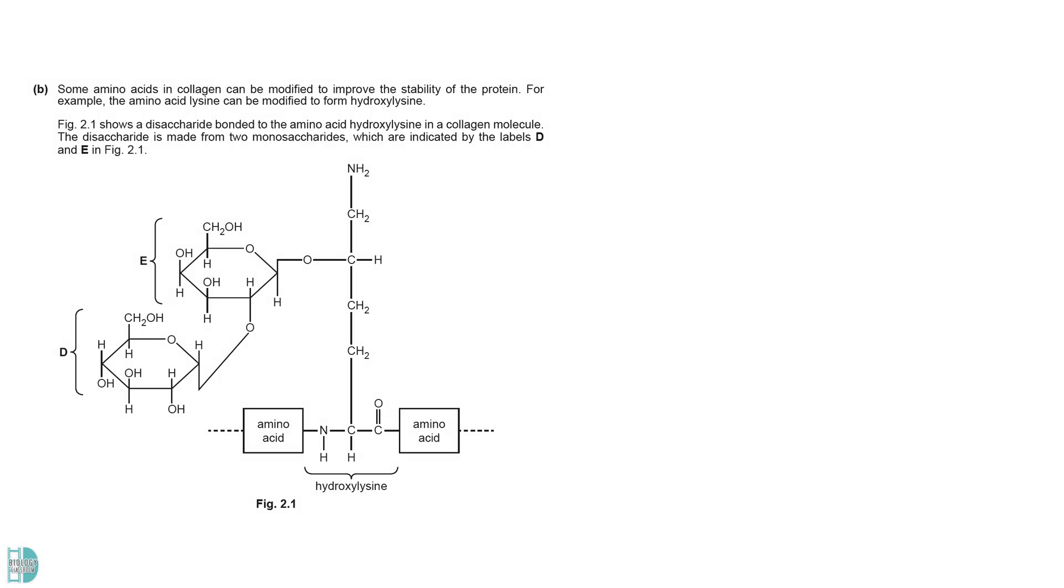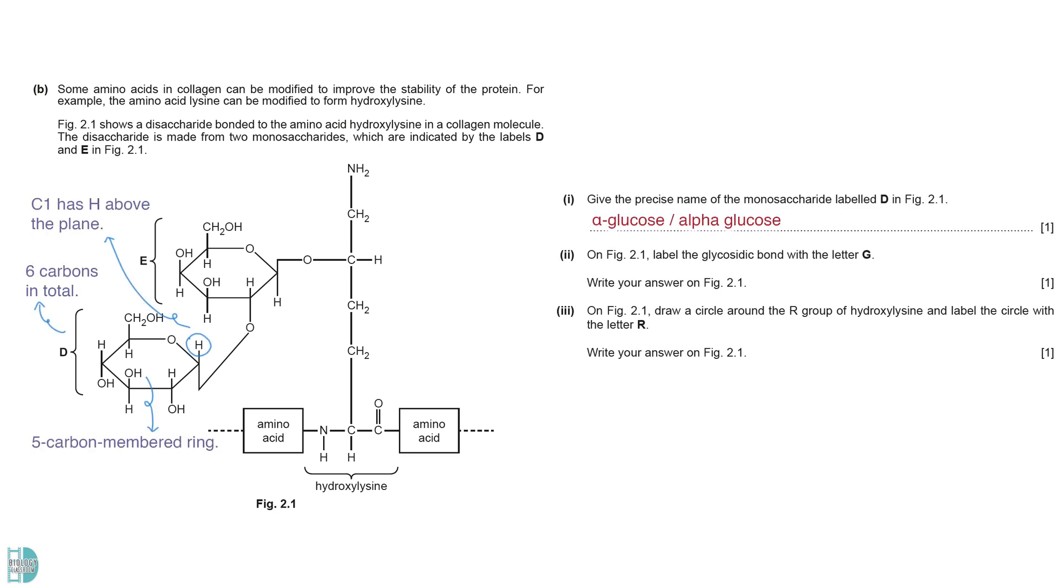B shows a disaccharide bonded to the amino acid hydroxylysine. D is a hexose as it has six carbon atoms. It has a five-carbon membrane and hydrogen is found above the plane on carbon number one. These are the features of an alpha-glucose. A glycosidic bond is a covalent bond that links monosaccharides together. It is found between D and E.